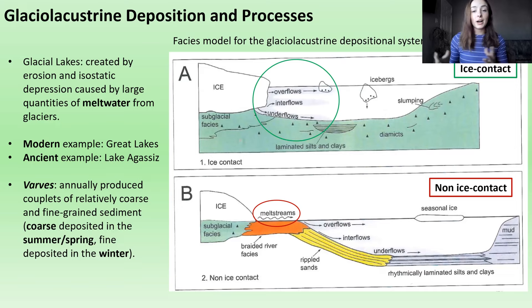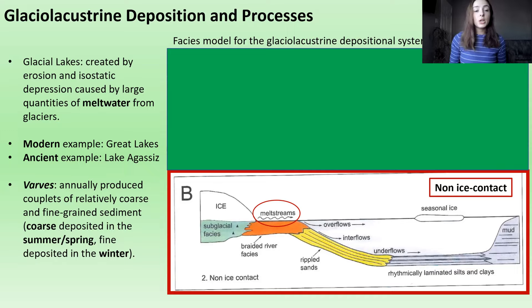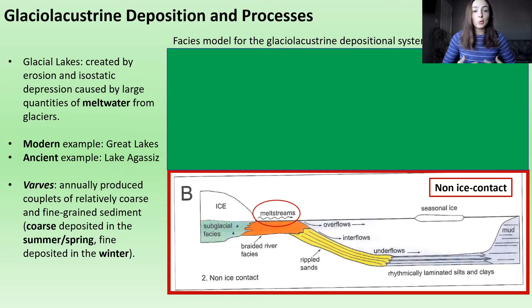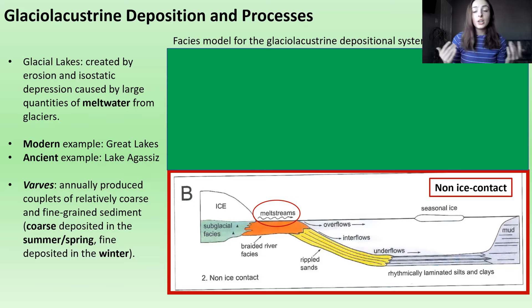In the non-ice contact system, we typically see the production of varves — annually produced couplets of coarse and then fine-grained sediment. Coarse-grained sand, silt, and gravel deposit in summer and spring when there is more meltwater inflow, while finer mud and suspended sediment settle to the basin floor in winter. These alternating layers of coarse and fine sediment showing seasonal variation are preserved and called varves.